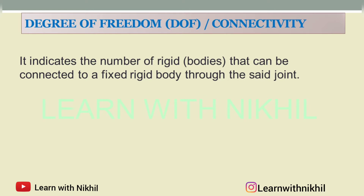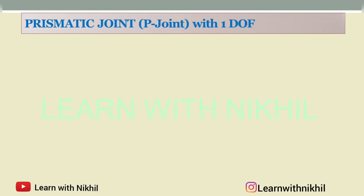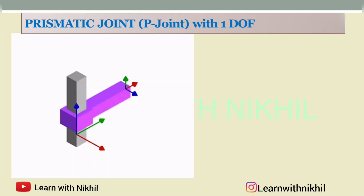First we will consider a prismatic joint, also called a P joint, and it has one degree of freedom. This is the image of a prismatic joint — you have one link as input link, another link as output link, named link i and link j respectively, and the prismatic joint between them. As it has one joint, it has one degree of freedom.